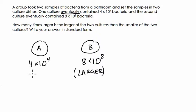10 to the 8th is huge. It's almost a billion. It's 100 million, right? 800 million bacteria. 10 to the 4th is in the 10,000 range, way smaller, right?